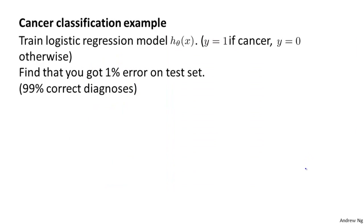Consider the problem of cancer classification where we have features of medical patients and we want to decide whether or not they have cancer — like the malignant versus benign tumor classification example from earlier. Let's say y equals 1 if the patient has cancer and y equals 0 if they do not. We might create a logistic regression classifier, and say we test it on a test set and find that we get 1% error — so we're making 99% correct diagnoses. Seems like a really impressive result.